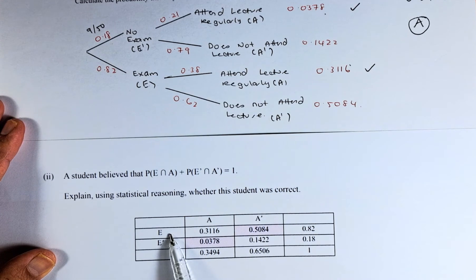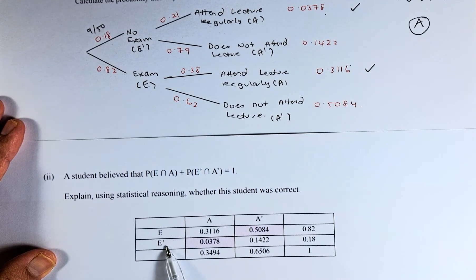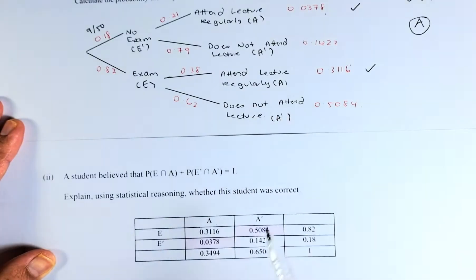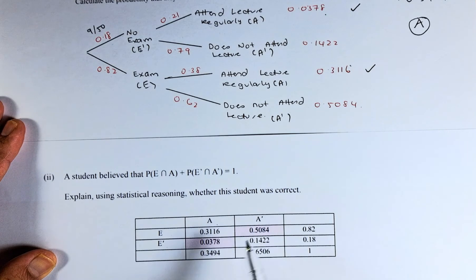E is those who have an exam. E' have no exam. A attended regularly. A prime does not attend regularly. So, all these numbers are put in this box and you can do it on this table.